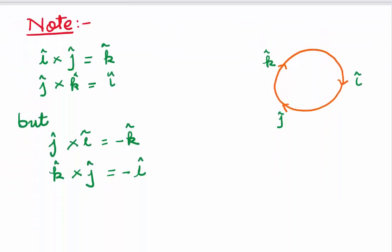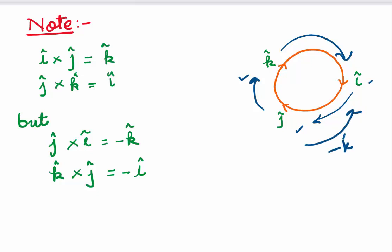A few things to note about unit vector cross products: using the cyclic order i → j → k, i cross j = k, and k cross i = j. If you reverse the direction, the sign becomes negative: j cross i = −k, and k cross j = −i. This is something important to remember.